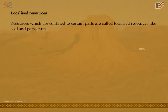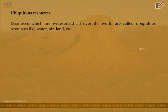Localized resources are those confined to certain parts of the world, like coal and petroleum. Ubiquitous resources are those which are widespread all over the world, like water, air, land, etc.